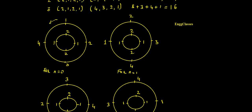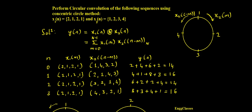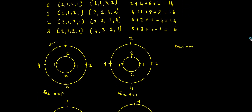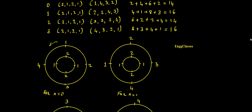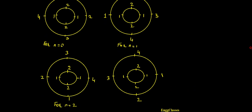This is one of the simplest numericals in digital signal processing on the concept of circular convolution using the concentric ring method. I have explained this numerical in a very lucid manner and I hope you have understood. If you still have any doubts, please let me know in the comment section. Thank you so much for watching.